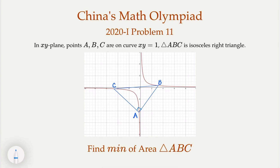This is a Math Olympiad problem. We're given a hyperbola xy equals 1, and we're going to have a triangle with vertices A, B, C on the curve. A, B, C is such that the triangle is an isosceles right triangle — meaning this angle is 90 degrees and the two legs are equal to each other. We want to find the minimum value of the area of the triangle.